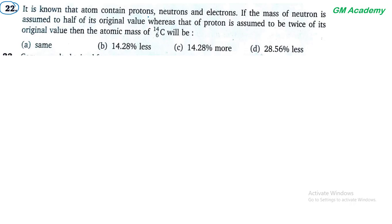Next question 22. It is known that atom contains protons, neutrons and electrons. If the mass of neutron is assumed to be half of its original value whereas that of proton is assumed to be twice of its original value, then the atomic mass of carbon-14 will be. Carbon-14 में number of protons = atomic number = 6.